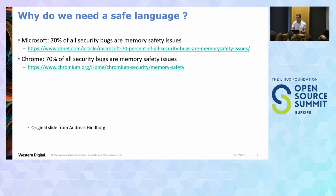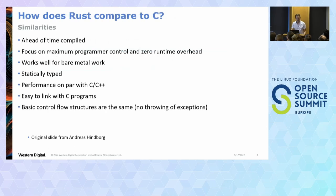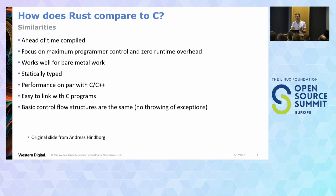I assume everyone here knows C, so I wanted to start with how Rust is similar to C. It's ahead-of-time compiled — you use LLVM in the Rust case to build assembly output. It focuses on maximum programming control: unlike a scripting language, you have full access to the hardware with no JVM or anything like that. Zero runtime overhead. It works well for bare metal, which is why I'm here. It's statically typed, has great performance, and it's easy to link with C programs — you can call C from Rust and Rust from C, so you don't have to rewrite everything in Rust overnight.